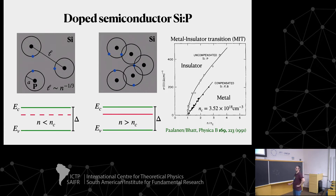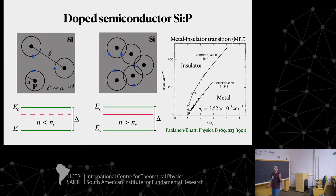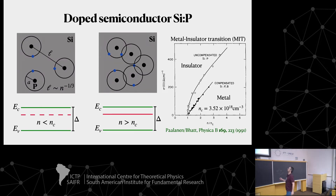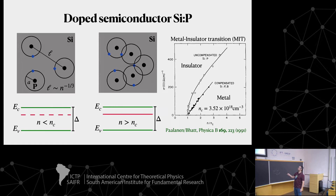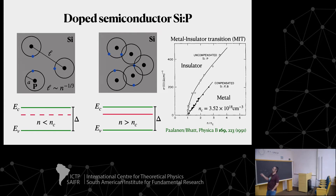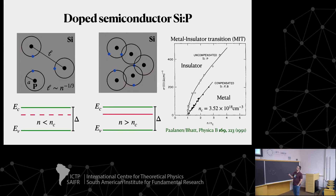The observable which describes this metal-insulator transition is the conductivity extrapolated to T equals zero. Looking at the uncompensated case — just phosphorus-doped silicon — when you go to the critical value of N, the conductivity goes to zero continuously, giving a clear metal-insulator transition. The critical concentration N_c in the real material is about 10^18 cm^-3. I'll calculate everything as a function of N_c.